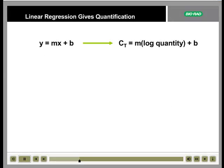The standard curve gives a straight line when we view it with CT plotted against the log of the starting quantity. y equals mx plus b is simply the equation for a straight line. Here, m is the slope, x is the log quantity, and y is the CT value.